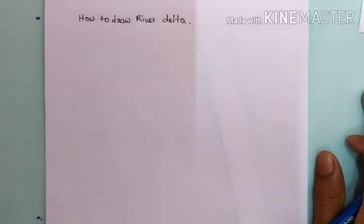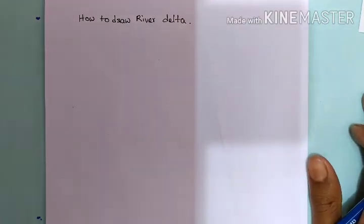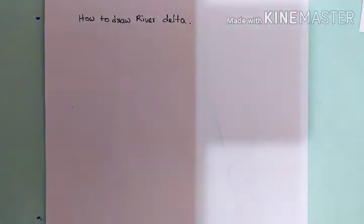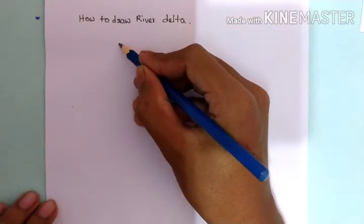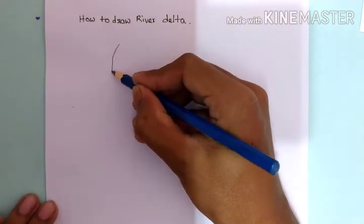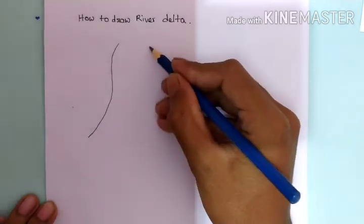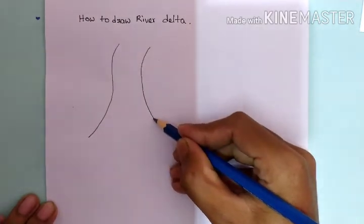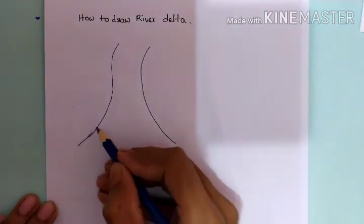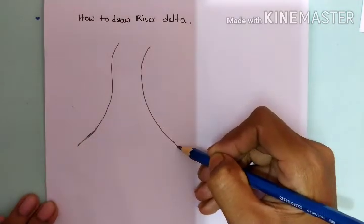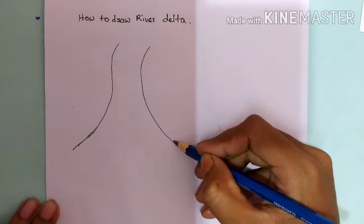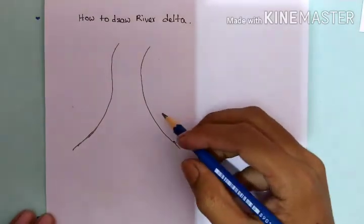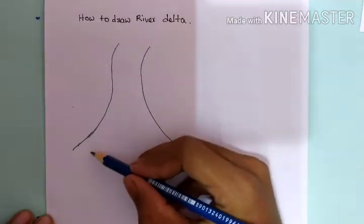Hello guys, this is Anup Kumar and today I am going to show you how to draw a river delta. So let's begin. At first we need to make the river, and the end of the river will be a funnel shape — it will be like a funnel.